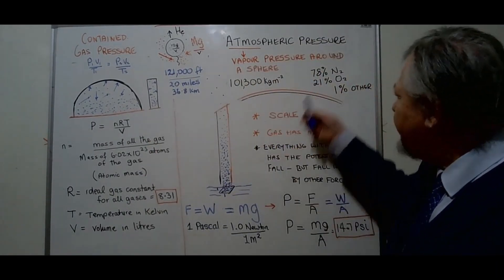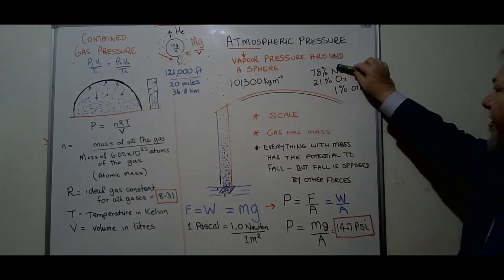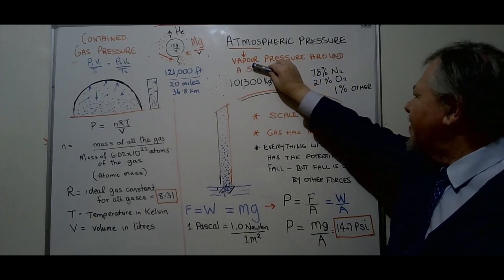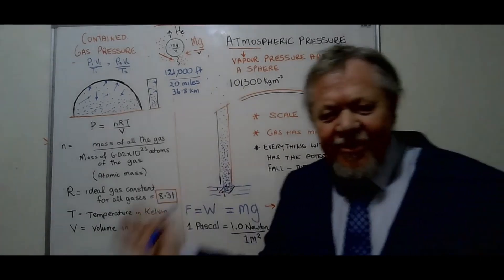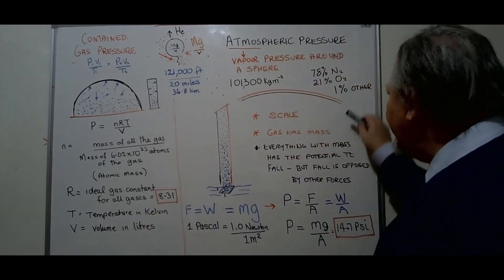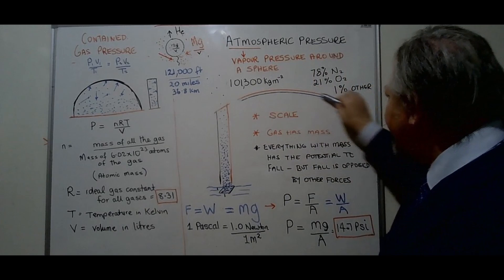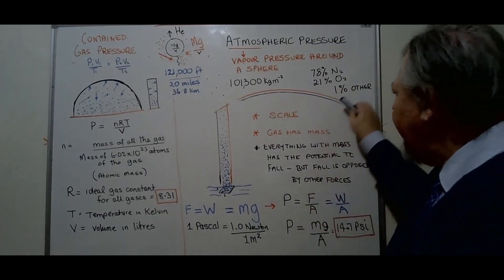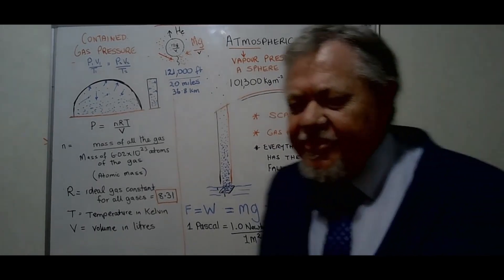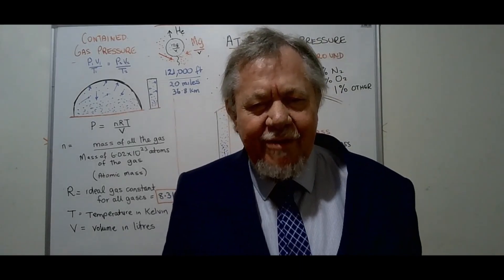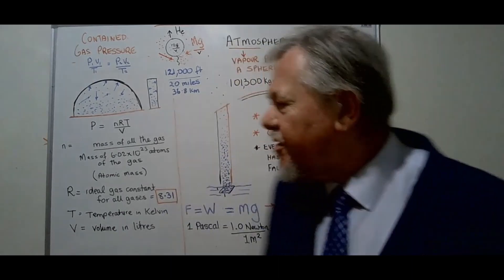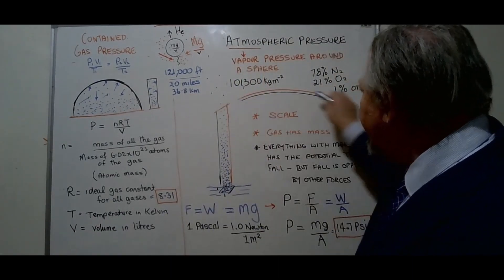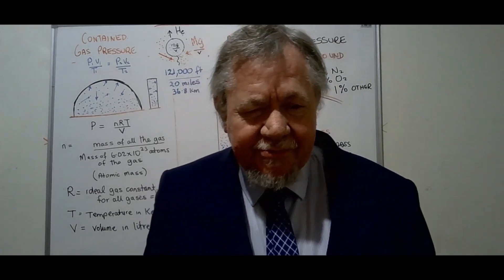All right, let's have a look at atmospheric pressure. Atmospheric pressure, atmos meaning vapor and spheric obviously meaning around a sphere. Well, let's have a look at this. I've drawn something here. At this scale, that red line over there representing the atmosphere would be way way way more thicker than it needs to be. In fact, if it was this scale like this, the atmosphere would barely be thicker than a piece of paper.